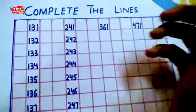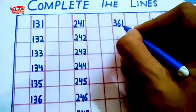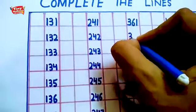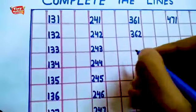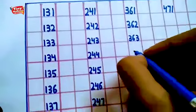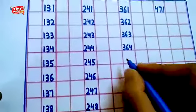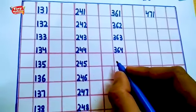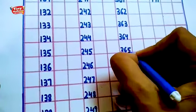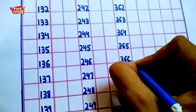Now see the next line, what number is it? Yes, 361. After 361 is 362, 363, 364. Now what should I write? Yes, 365.